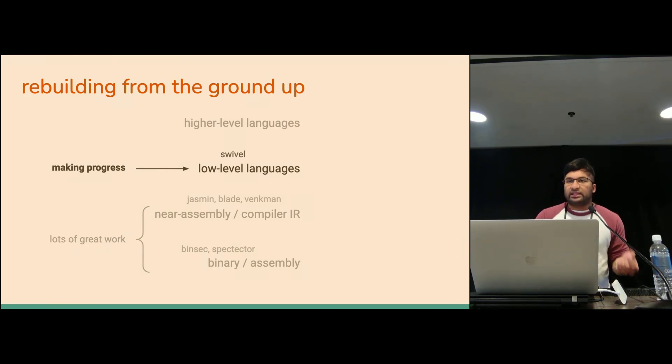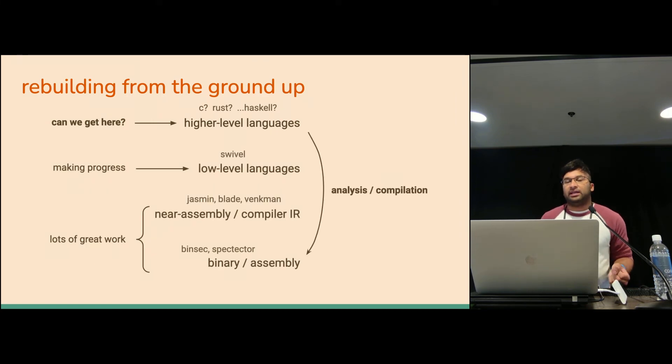What I really think we should focus on is being able to take that all the way up to the highest level. Can we get to the point where we can write programs in languages like C or Rust or perhaps even Haskell and be able to say, yes, this program is going to be free from Spectre attacks. The work that we need to do to get there is to focus on these analysis and compilation techniques. Just how Swivel can go from WebAssembly to a lower level and preserve Spectre, Jasmine, Blade, Venkman, the same thing. Taking it down and at the bottom, we have BINSEC and Spectre that can verify the bottom level that you're free from Spectre attacks. Being able to use these techniques to go all the way from the higher levels down to the bottom and make sure that we're free from Spectre attacks.